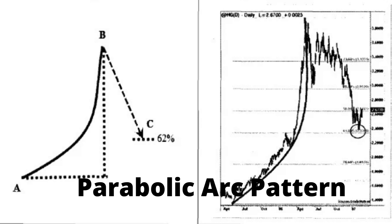Parabolic arc is a reversal pattern and has a very predictable outcome. Although they are predictable, they are relatively difficult to trade since the market sentiment is bullish and it may be relatively tough to pinpoint reversals to trade. Most parabolic arc patterns have a significant correction of 62% from the top.